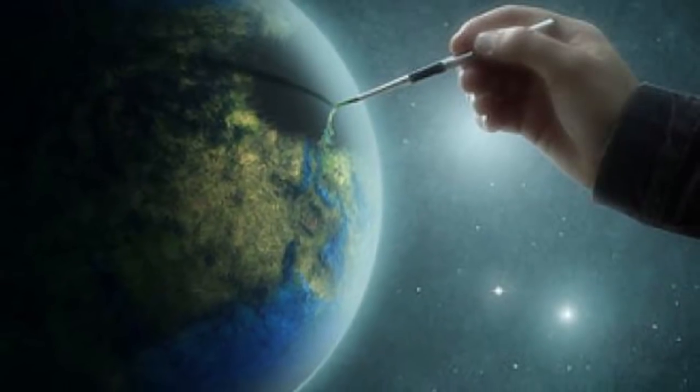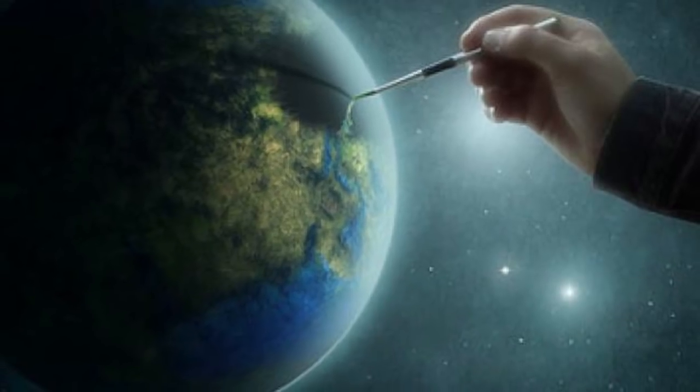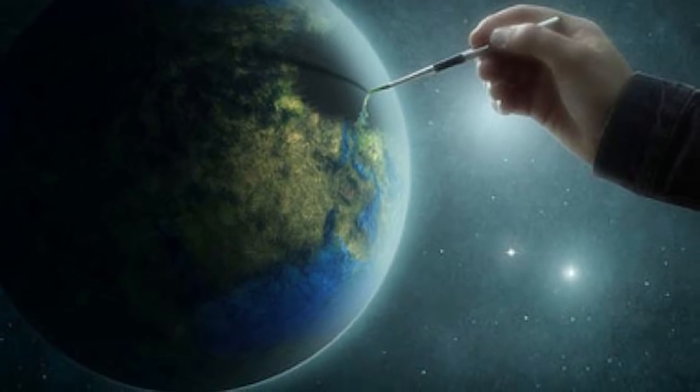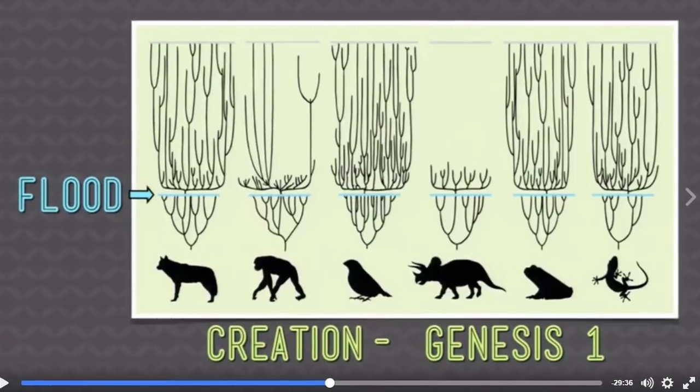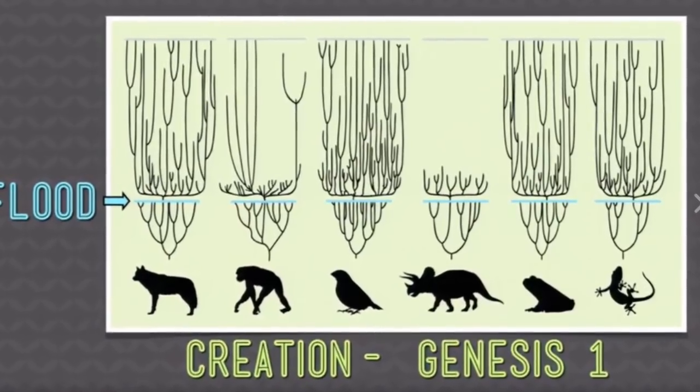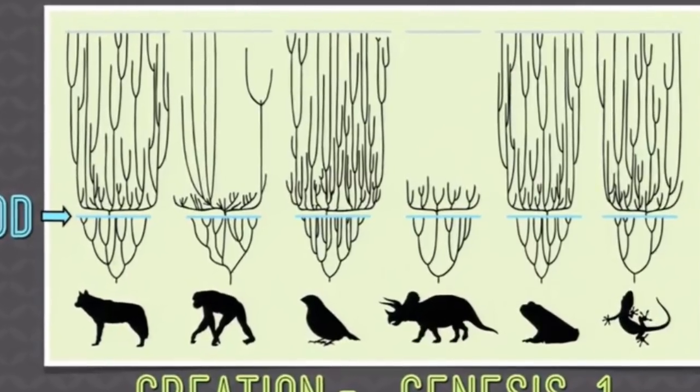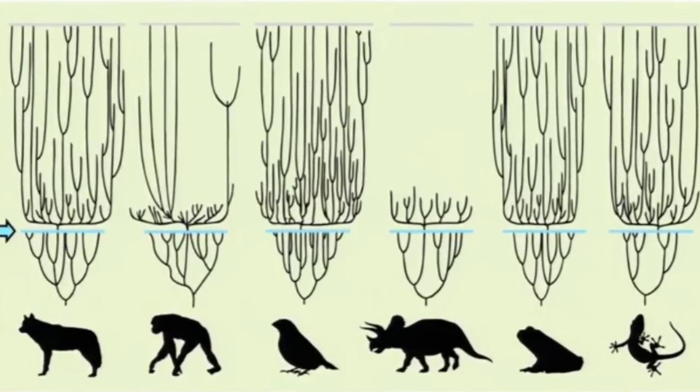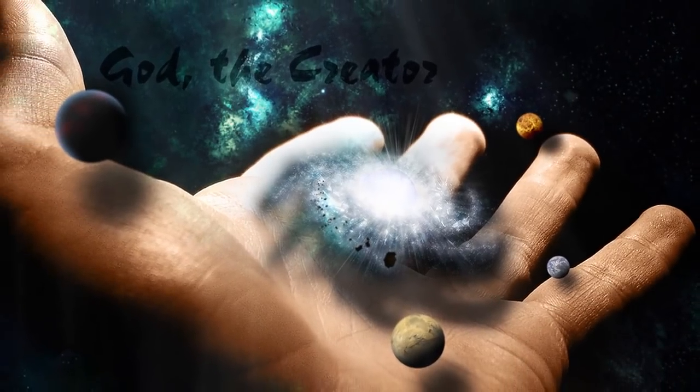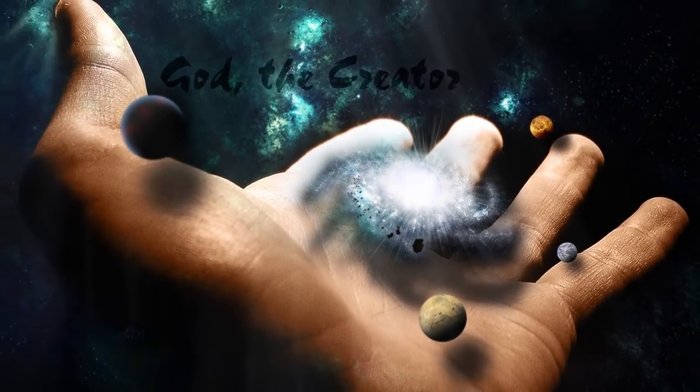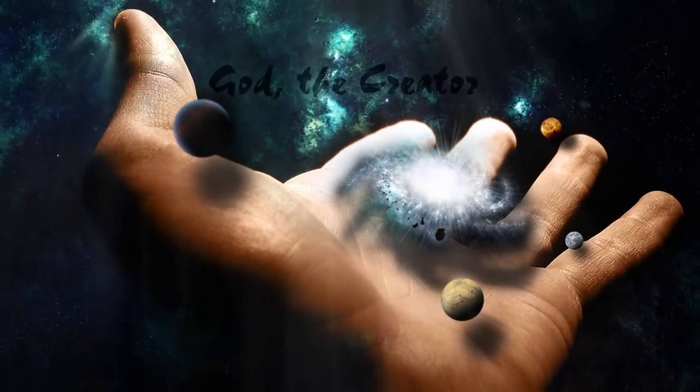Creationism, on the other hand, is derived from the religious claim that a creation event occurred in the past with all variations of life, known as kinds, being created separately. This can be intuitively seen by the mere observation that there is a wide variety of life that all seems quite diverse and unrelated.